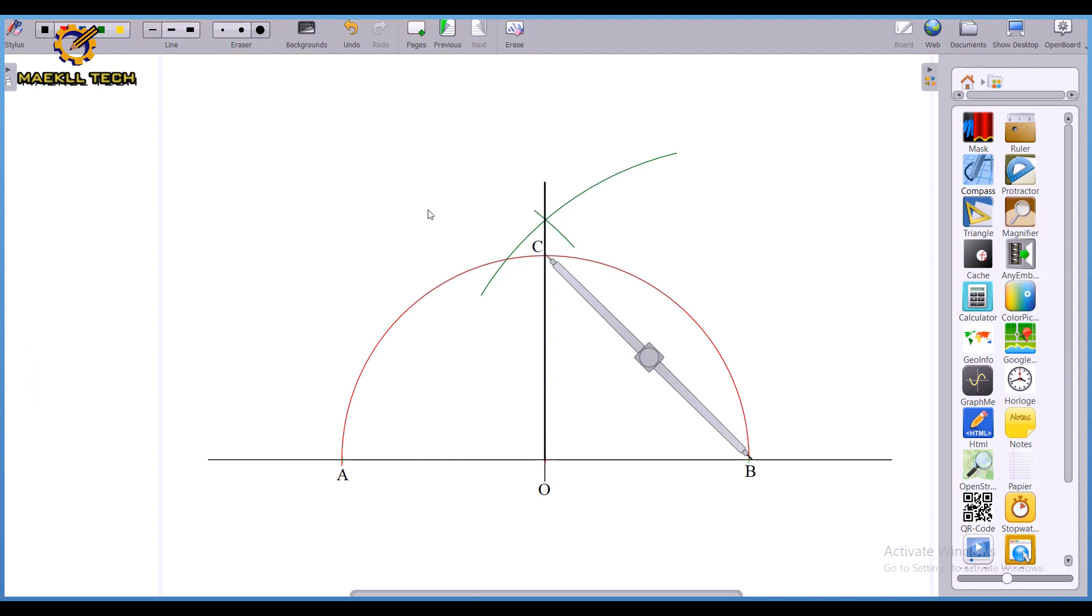So with my compass, I pick the length between B and C. You see, picking length BC with my compass. Then I'm going to stand on point C.